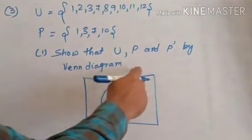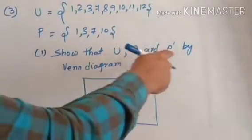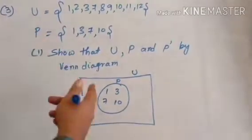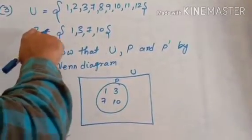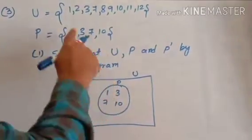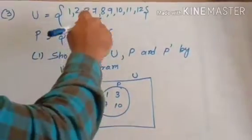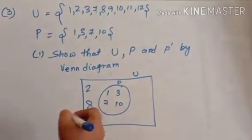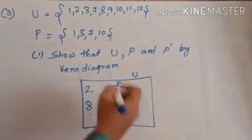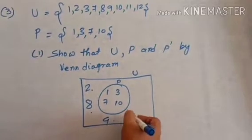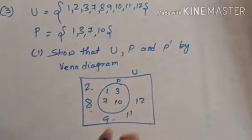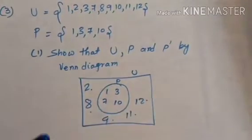Now we draw U and P, and after that we also draw P complement. For P complement, we see what is left in U after removing the elements of P. 1 is gone, 2 is left, 3 is gone, 7 is gone, 8 is left, 9, 10 is gone, 11 and 12. So P complement is {2, 8, 9, 11, 12}.